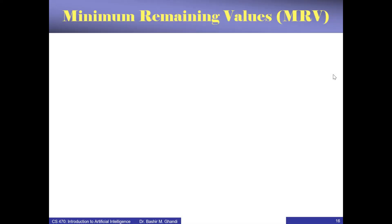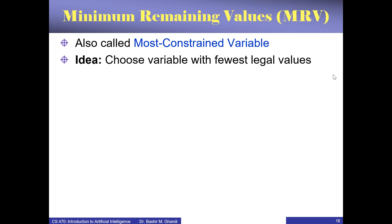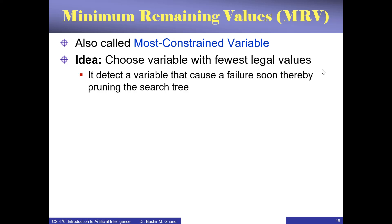We start with a heuristic called Minimum Remaining Values, MRV. This is also sometimes called most constrained variable. This heuristic says when you are choosing a variable to next give an assignment, choose a variable that has the minimum remaining legal values — the variable with the fewest legal values. The idea is if you do that, the algorithm will detect a variable that can cause a failure soon and therefore it will prune the search.